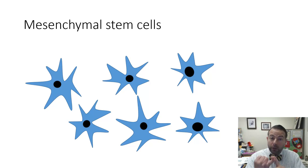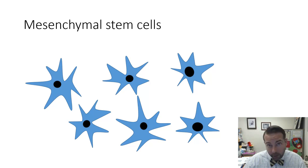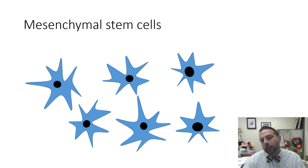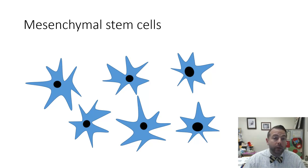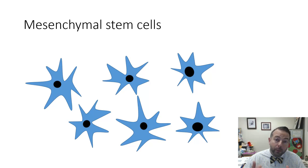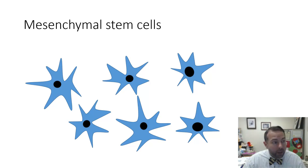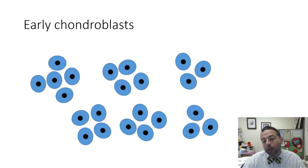They're going to first proliferate — proliferation meaning that the cells are going to multiply, we're going to get more of them. They're also going to differentiate, meaning they are going to shift from being a mesenchyme cell, which is not specialized, to become a specialized cartilage matrix-secreting cell, or a chondroblast. So the mesenchymal stem cells will undergo both proliferation and differentiation to become early chondroblasts.